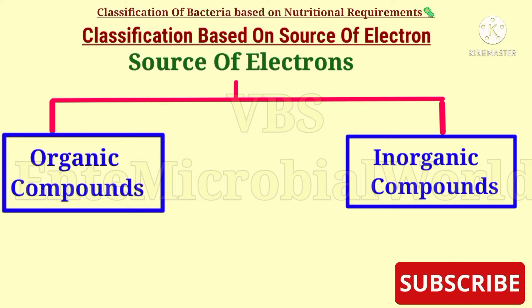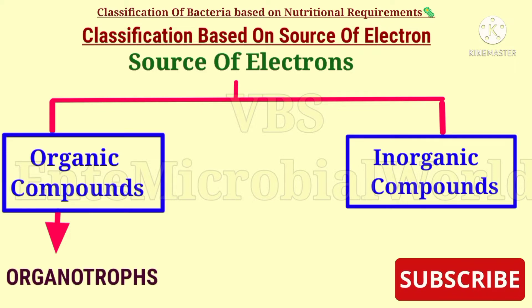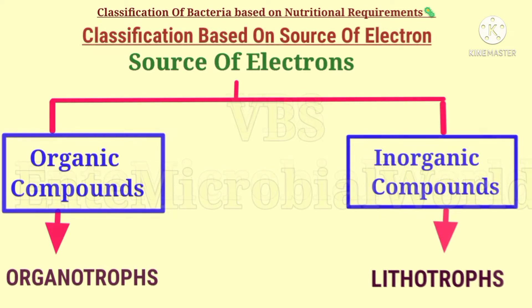Some bacteria can use organic compounds as electron donors and are called organotrophs. Some bacteria can use reduced inorganic compounds as electron donors and are called lithotrophs.